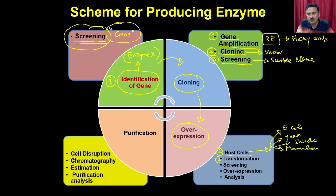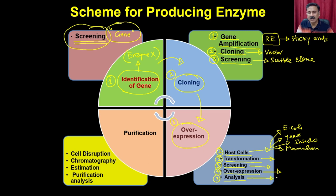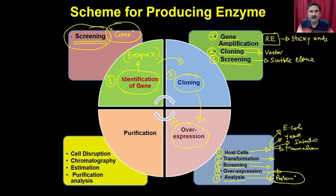Once you select the host, you transform the clone produced in step 2 into it. Then you do a screening to select the suitable transformed clone and proceed with overexpression, using different strategies depending on the host. You analyze whether the protein or enzyme is being produced, and once confirmed, you make large cultures to produce large amounts of host cells and thereby large amounts of protein.